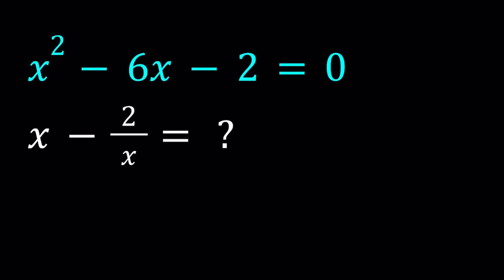Hello, everyone. In this video, we're going to be working with an algebraic expression. We have x squared minus 6x minus 2 equals 0, and we're supposed to evaluate x minus 2 over x. I'll be presenting two methods. Let's start with the first one.